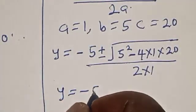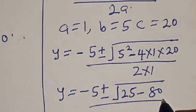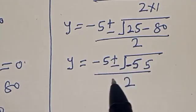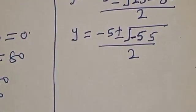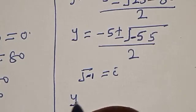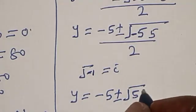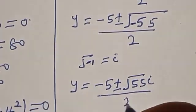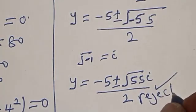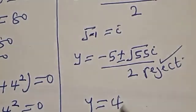Note that the square root of negative 1 is i. So we have y equals negative 5 plus or minus i times square root of 55, divided by 2. This is a complex solution, so we reject this. The only real solution we have is y equals 4.